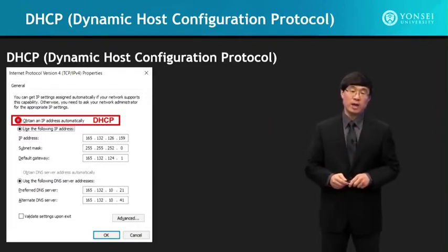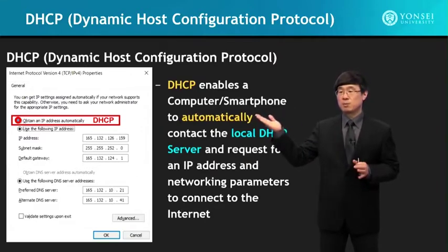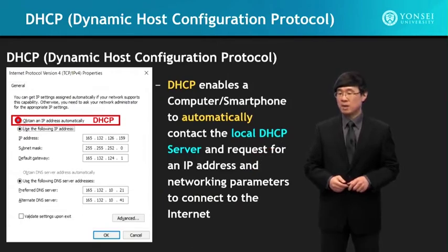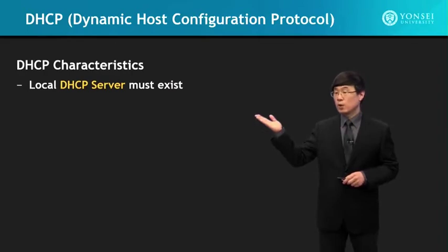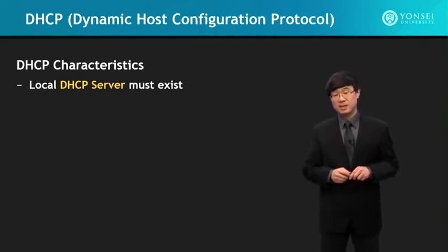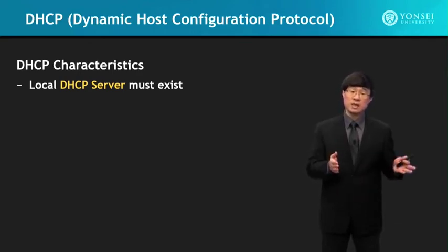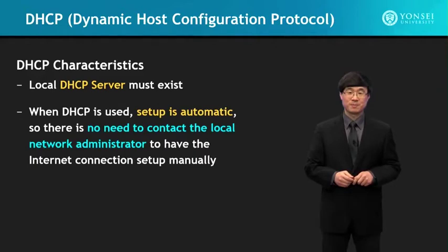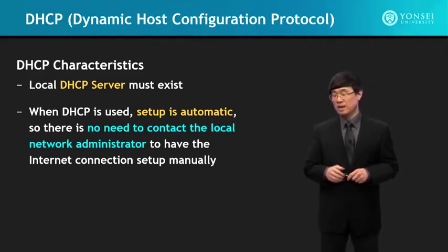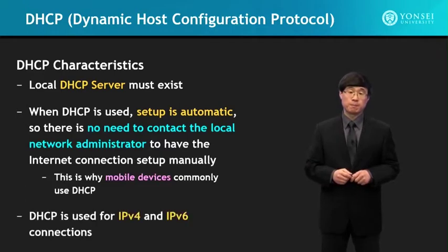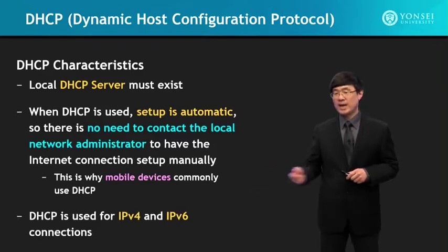DHCP enables a computer or smartphone to automatically contact the local DHCP server and request an IP address and networking parameters to connect to the Internet. A local DHCP server must exist — just clicking that button doesn't necessarily mean you'll get DHCP services. When DHCP is used, setup is automatic; there is no need to contact the local network administrator to have the Internet connection set up manually. This is why mobile devices commonly use DHCP, and it's used for both IPv4 and IPv6 connections.